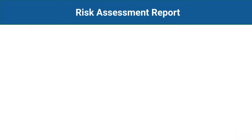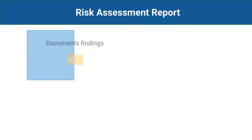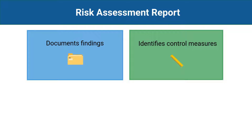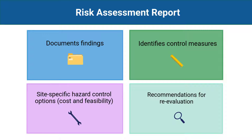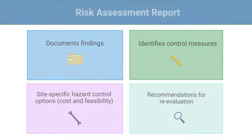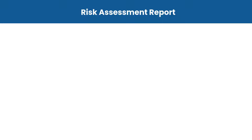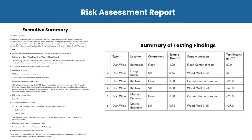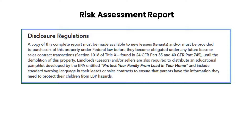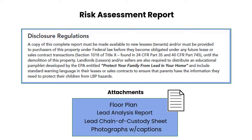The next report is for the Risk Assessment. A Risk Assessment Report is compiled by the Risk Assessor, who documents the findings and identifies control measures. The report includes site-specific lead hazard control options and their cost and feasibility, as well as recommendations to the owner for re-evaluation and actions for when no hazards are identified. Similar to the Lead-Based Paint Inspection Report, the Risk Assessment Report should include an Executive Summary, Summary of Testing Findings, Disclosure of Lead Language, and Attachments to provide further detail.